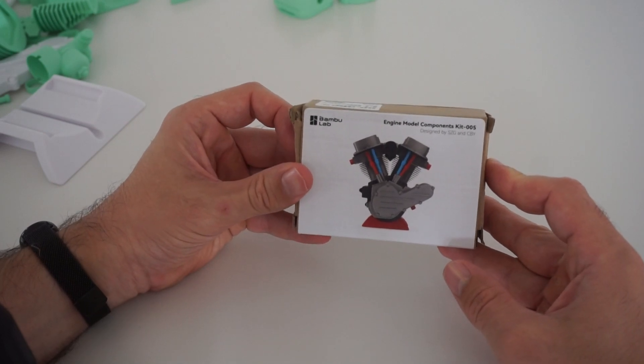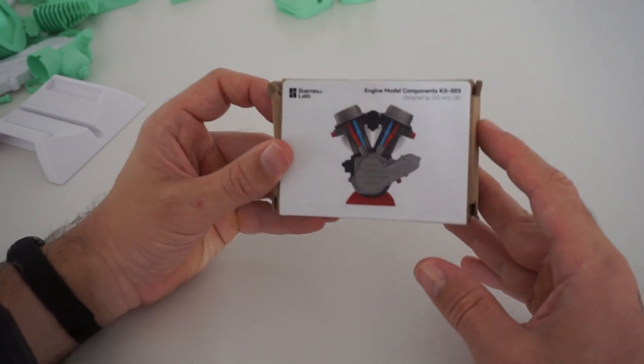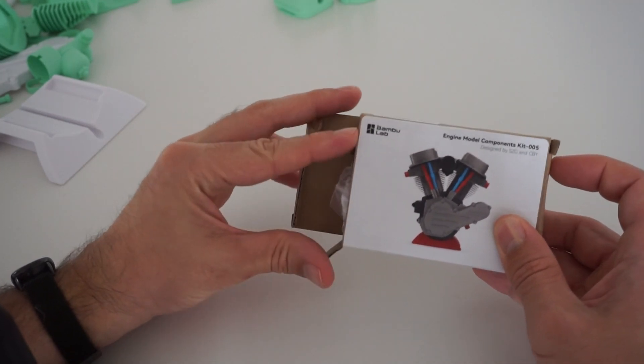All right, so here's the V-twin engine model kit designed by SZG and CVY. This tiny little box is what it comes with and it's supported by Bamboo Labs.